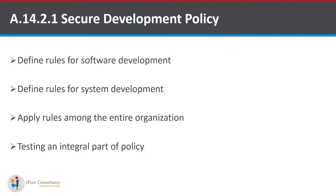The first one is Secure Development Policy. It states that rules for development of software and systems shall be established and applied to development within the organization. These rules must be applied in the entire organization, and regular testing of compliance of this policy must be performed.